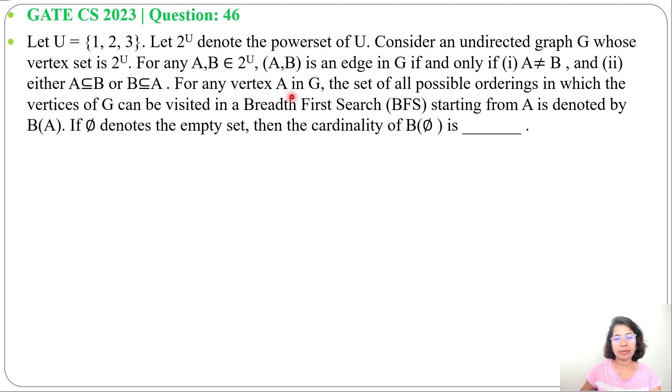For any vertex A in G, the set of all possible orderings in which the vertices of G can be visited in breadth first search (BFS) starting from A is denoted by B(A). So the set of BFS orderings possible starting from A is B(A).